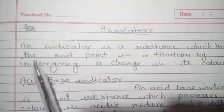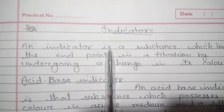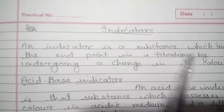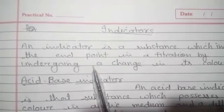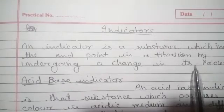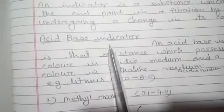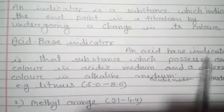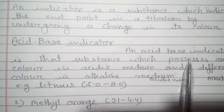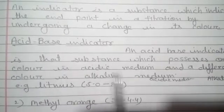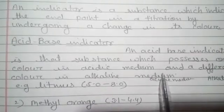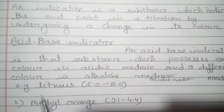Indicators. An indicator is a substance which indicates the endpoint in a titration by undergoing a change in its color. An acid-base indicator is that substance which possesses one color in acidic medium and a different color in alkaline medium. For example, litmus.